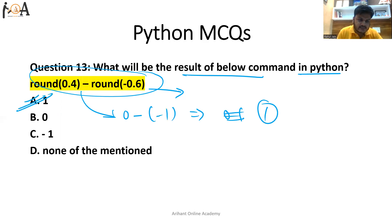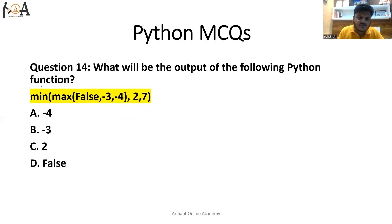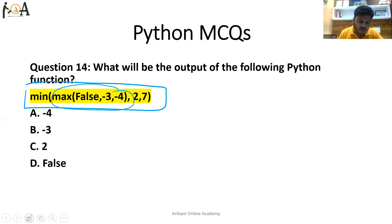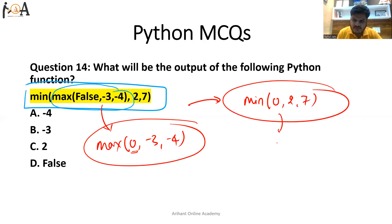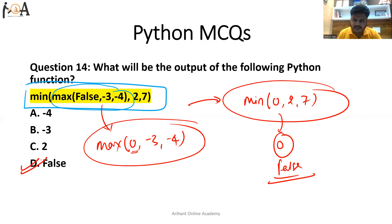So option A is the correct answer — the round function rounds off digits. Question number 14 (labeled 14 in sequence): what will be the output of the following Python function? We solve the inside function first: max(False, -3, -4) — False means 0 — so the max of 0, -3, -4 is 0. The result then becomes min(0, 2, 7). The min of that is 0, which is represented as False. Hence option D is the correct answer.